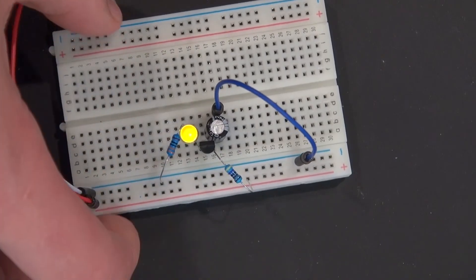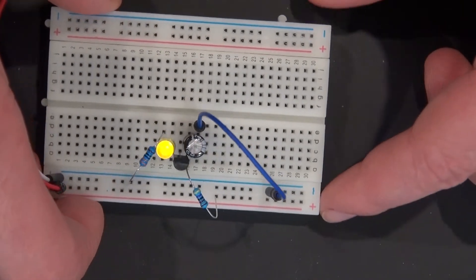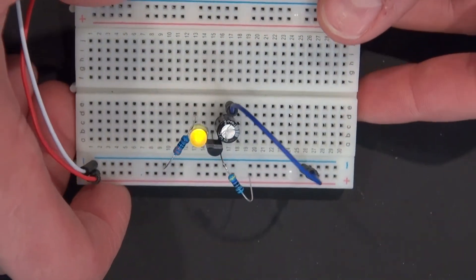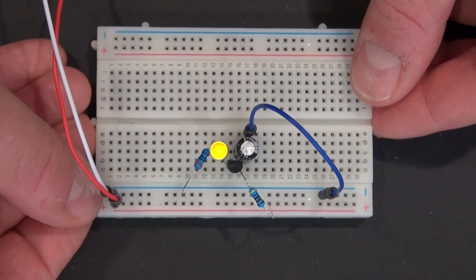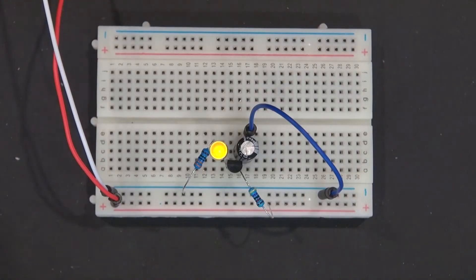And there you have it, your blinking LED. A simple blinking LED. It's blinking a little strange on camera, only because of the frame rate of the camera. The frame rate of the camera is not quite the same.